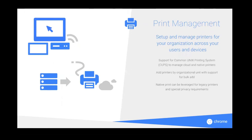I'd like to take a moment to talk about printer management, because this has been a pain point. We're in a period where network printers switching to the cloud are not uniform, so in some instances it was difficult to get Chrome devices to mesh with existing organizational unit printers. Now support for Common Unix Printing Systems (CUPS) will allow for easy management so Chrome devices can immediately connect to existing infrastructure. You can add printers via bulk add, and native print is available for legacy printers and special privacy requirements. Admins can add, remove, edit, enable, and disable local printers via the management console.